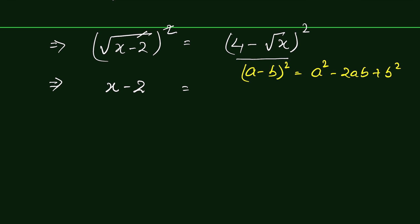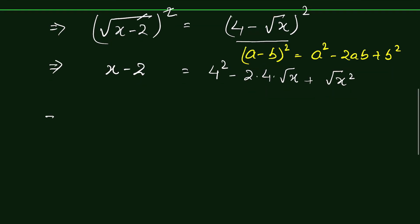We expand (a minus b)² as a² minus 2ab plus b². So the right side becomes 4² minus 2 times 4 times square root of x plus (square root of x)². That gives us x minus 2 equals 16 minus 8 times square root of x plus x.